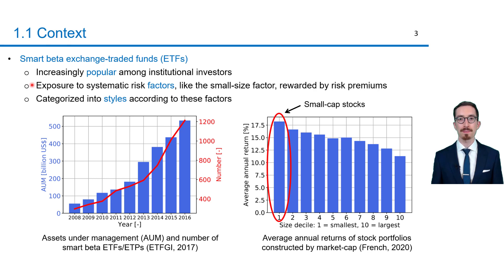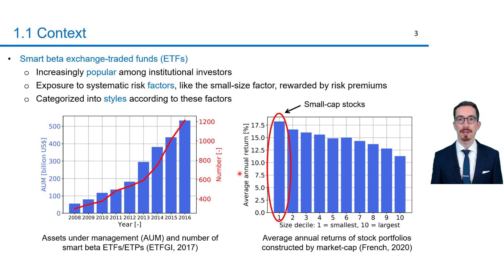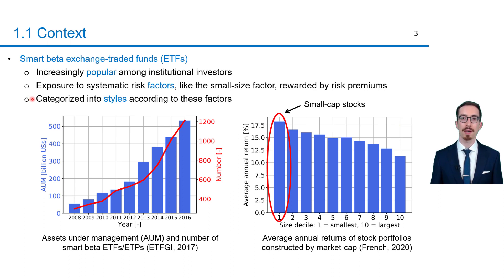One of these factors is the small size factor. The corresponding risk premium is illustrated here on the right. More specifically, this figure shows the average annual return of size-based stock portfolios. As you can see, the return of stocks with a small market capitalization is larger than the return of large-cap stocks. Depending on their factor, smart beta ETFs can be categorized into styles like the previous small cap style.